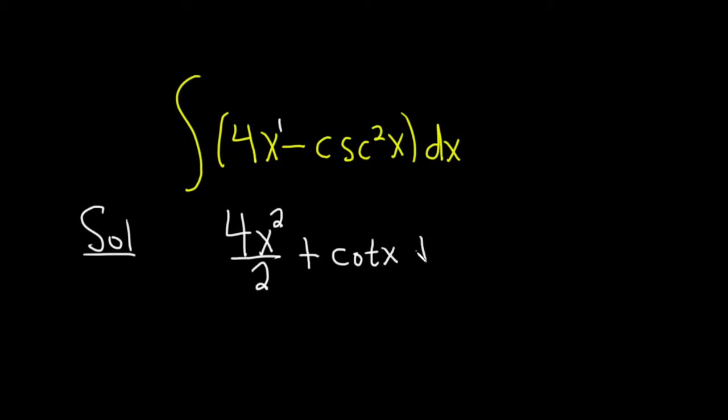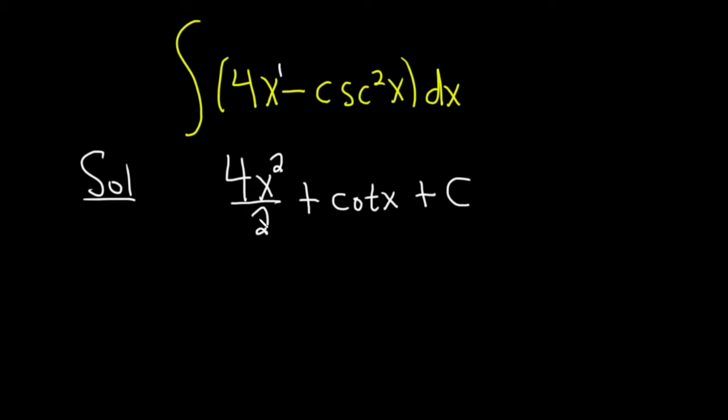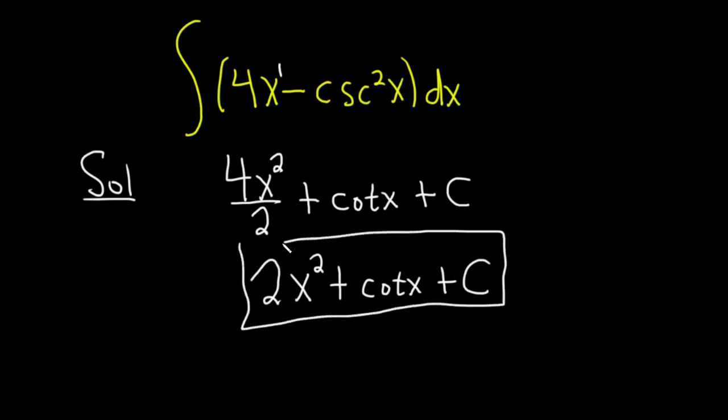And then we have plus c. At this point we're almost done. We can just clean this up a little bit by simplifying here. 2 goes into 4 twice. This is 2x squared plus cotangent of x plus capital C. And that should be the final answer.